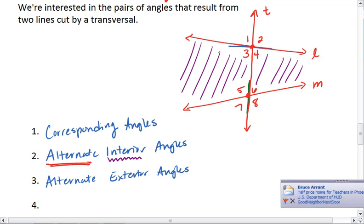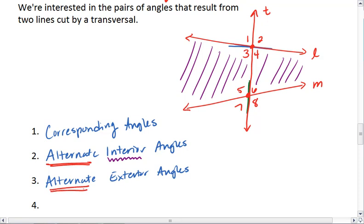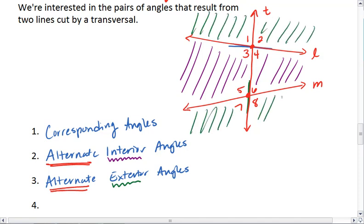Like above, we have alternate angles, which means we are on opposite sides of our transversal, but now we have exterior angles, meaning our angles are going to lie outside of that space between L and M. For example, angle 1 and angle 8 are alternate exterior angles. So are angle 2 and angle 7.